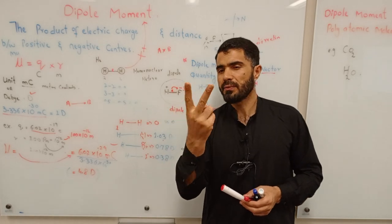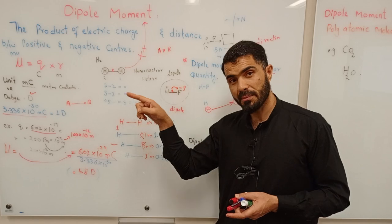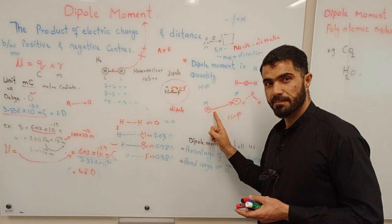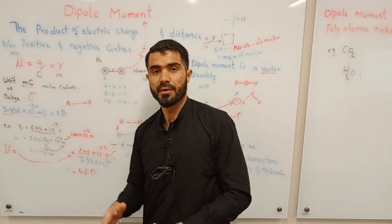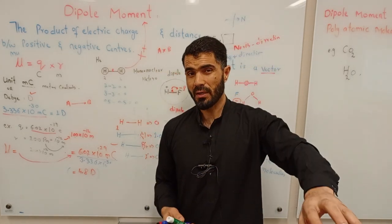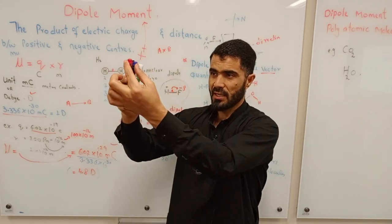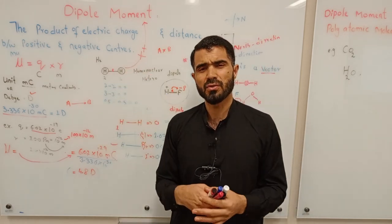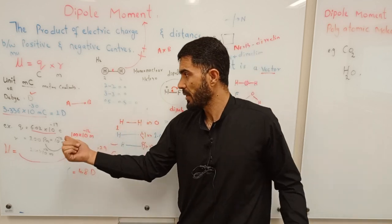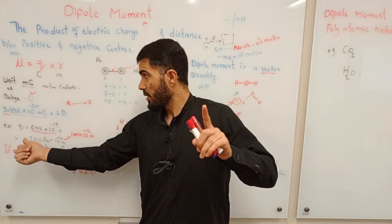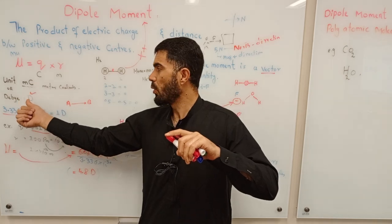Dipole moment is the product of two things: charge and distance. There are charges, and there is some distance between the positive and negative charges. When you multiply charge by distance, you get the dipole moment. The unit of dipole moment is meter·coulomb (C·m), or Debye (D). Debye is usually the unit written in textbooks.